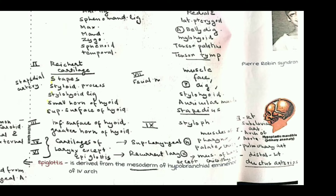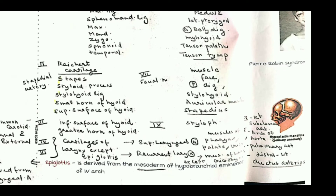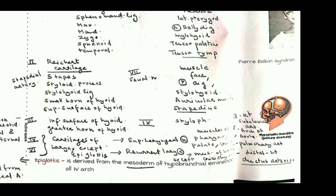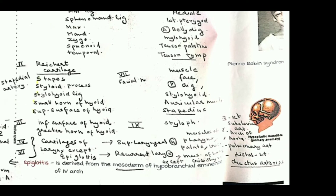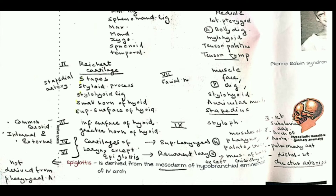The third arch arteries are the common carotid artery and the internal and external carotid arteries. The bone component is the inferior surface of the hyoid — the superior surface was from the second arch — and the greater horn of the hyoid corresponds to the third arch. The nerve of the third arch is the ninth nerve, the glossopharyngeal nerve, and there is only one muscle: the stylopharyngeus muscle.